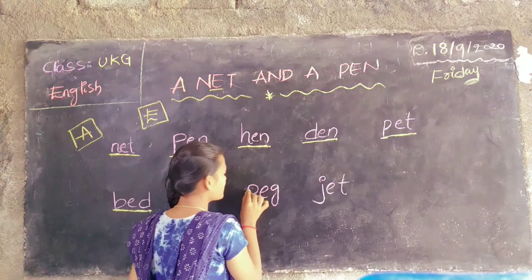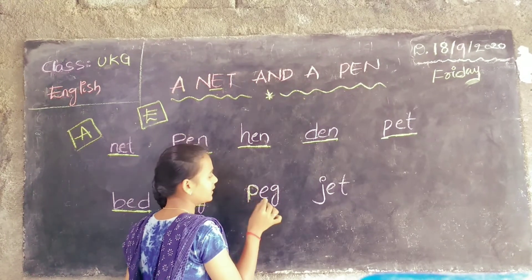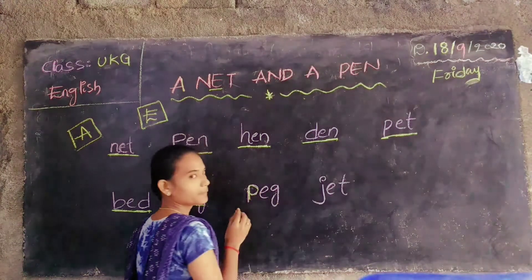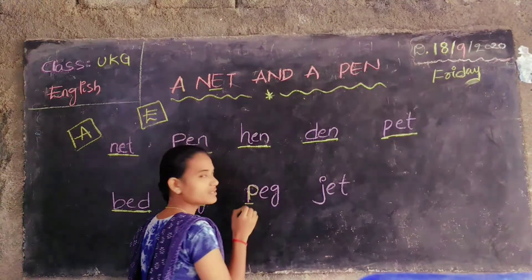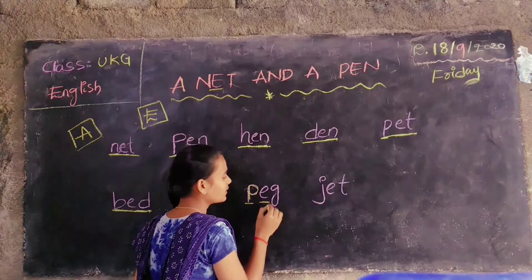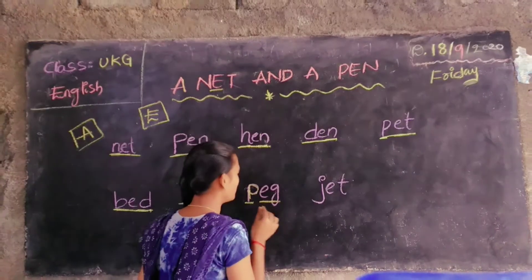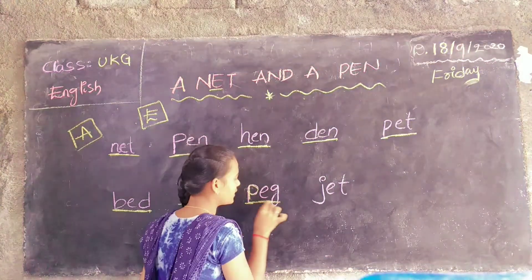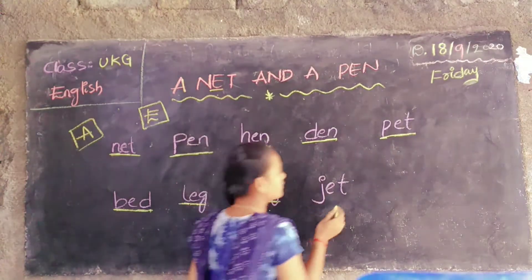Next, the word P-E-G. Peg. The sound of P is Pa. Next E sound? E. G sound? G. P-E-G. Peg.